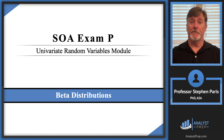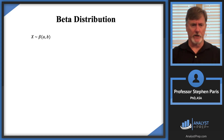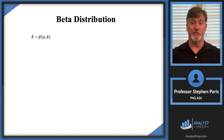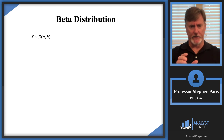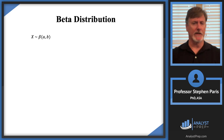In this video we're going to talk about the beta distribution. This is another one of those continuous distributions on the syllabus for exam P. We'll use the Greek letter beta to represent the beta distribution. It's a two-parameter distribution, and we're going to use A and B as the parameters. So X follows a beta distribution with parameters A and B.